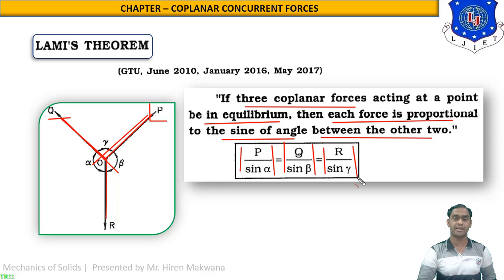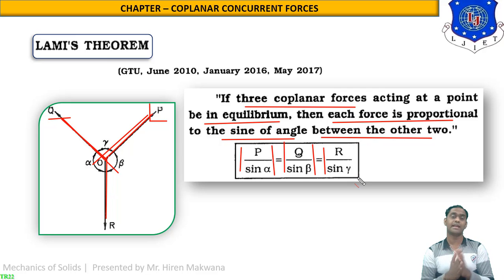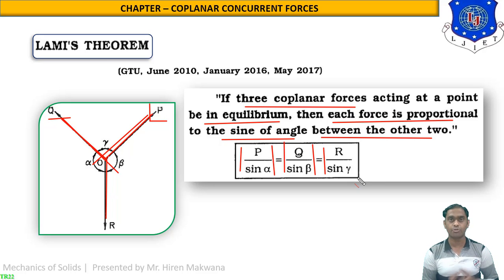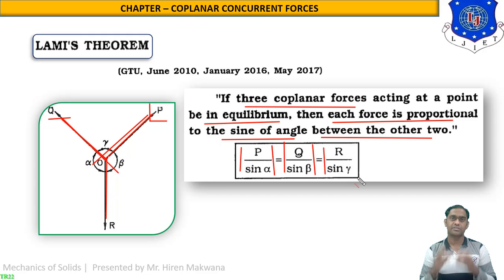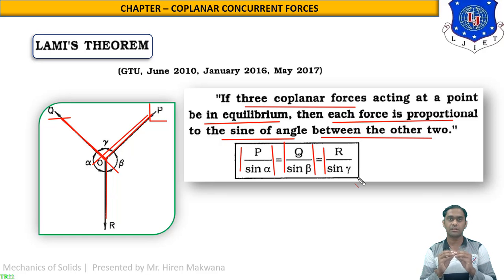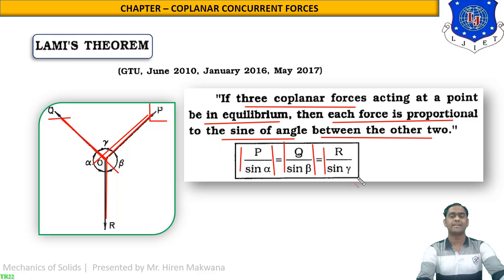All three ratios are equal because they are in proportion. Our target is to prove the equation: P/sin α = Q/sin β = R/sin γ. In this equation, P, Q, and R are three individual forces — R is not the resultant of P and Q. All three forces are completely independent of each other.